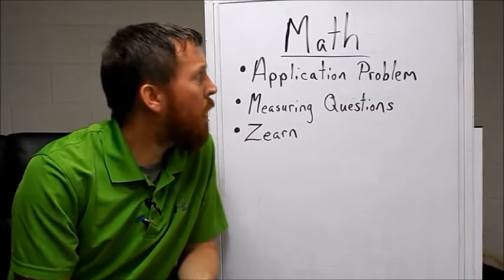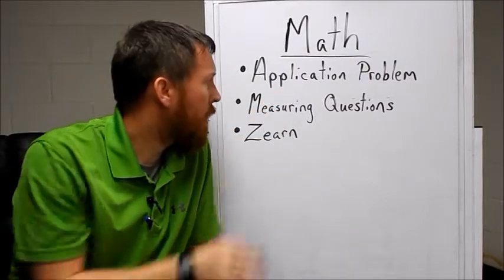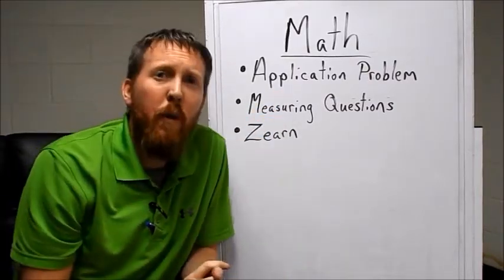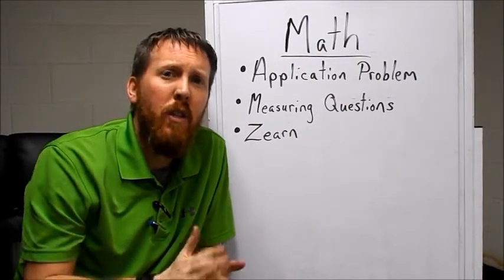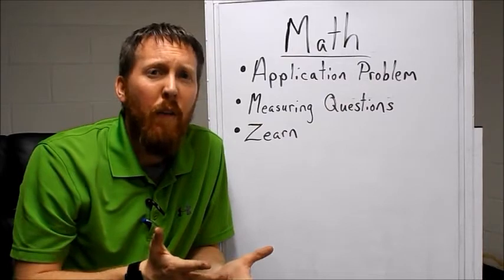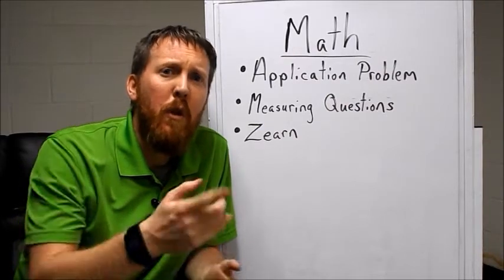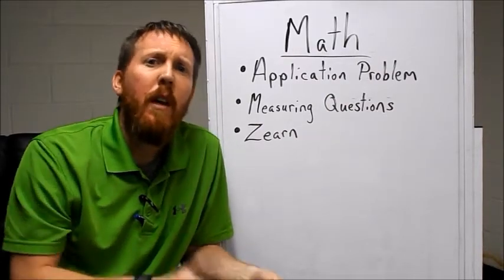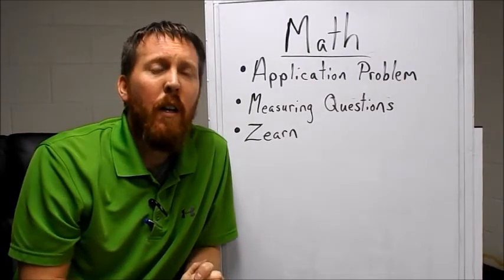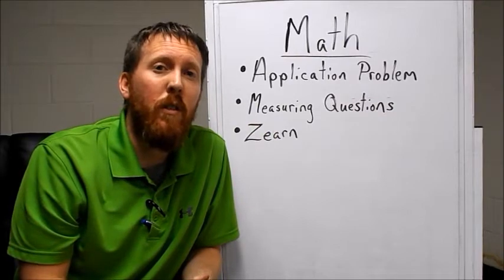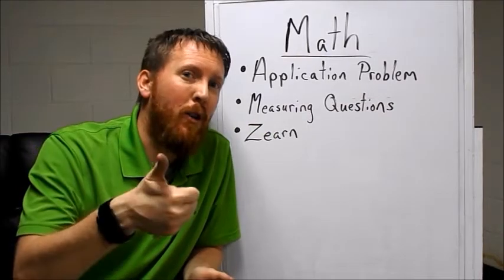For math today, you have your application problem and measuring questions, both found on Google Forms. And you're going to finish by doing Zurn for 15 minutes. That should take care of your math. Remember, if you do have a tape measure handy, measure two items. Measure a cup and measure a deck of playing cards. If you can do that, that'd be great. If you can't, just be sure that you try to answer these questions. Remember, happy measuring.